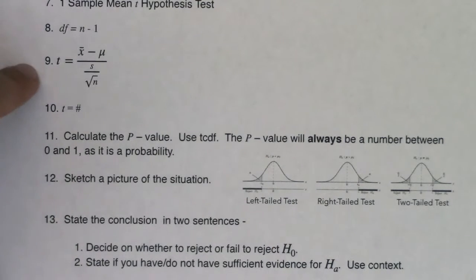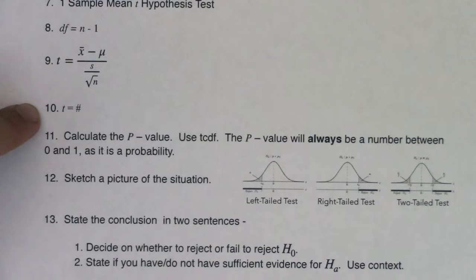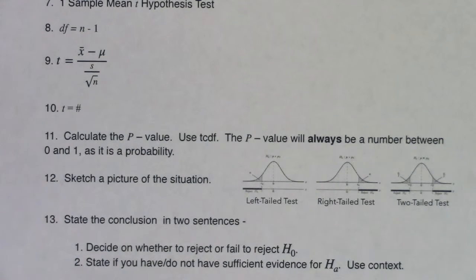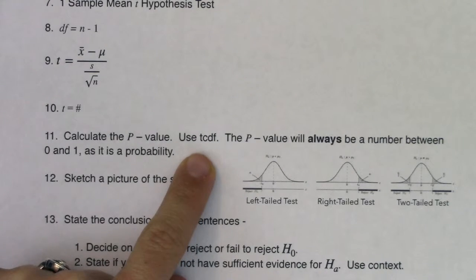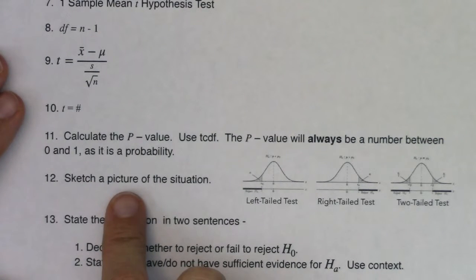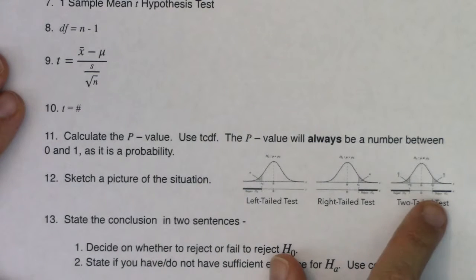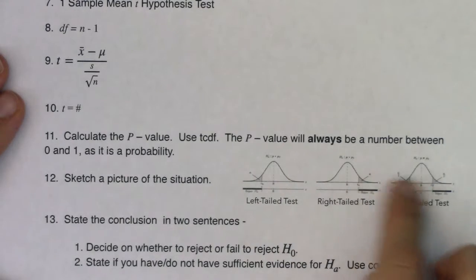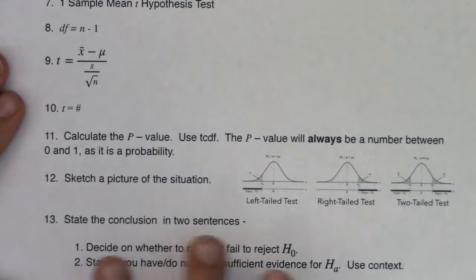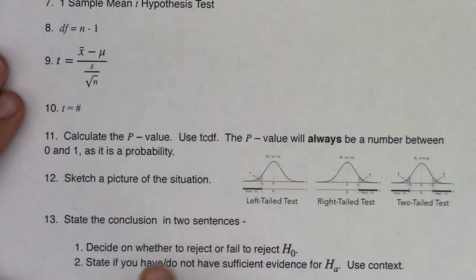In steps 10, 11, and 12, there's going to be some computations and you owe me a graph. In step 10, we're going to take our test statistic and plug in our numbers for our particular problem. You can get step 10 directly from the T-test calculator output screen, and you can also get step 11 from your calculator's output screen. If I don't give you enough information to use that T-test function, you can always use TCDF to find a p-value. Your p-value should always be a number between zero and one. Sketch a picture — left-tailed, right-tailed, or two-tailed — keeping in mind your x-axis will have the letter T on it, where in proportion land it would have had the letter Z. State your conclusion in two sentences: reject or fail to reject the null, and then you either have evidence for the alternate or you do not.